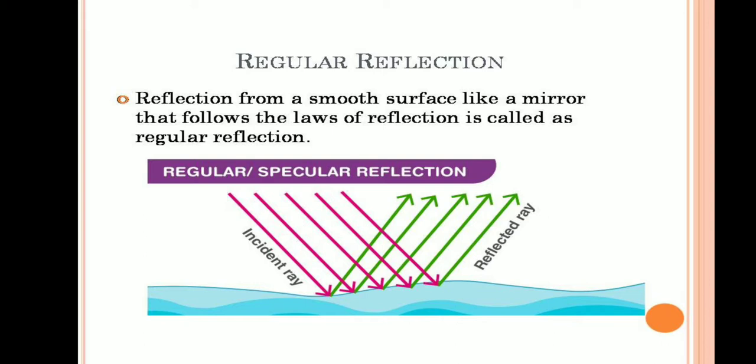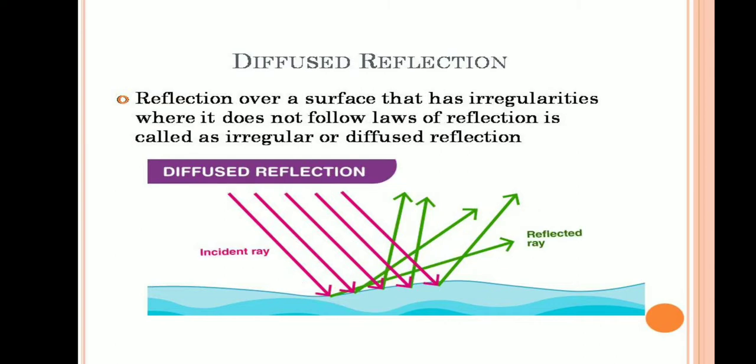When the incident ray falls on a smooth surface like a mirror, it reflects back as a parallel ray. This type of reflection is referred to as regular reflection. It is also called specular reflection. Now, irregular reflection — the reflection over a surface that has irregularities on the surface — does not follow the laws of reflection.